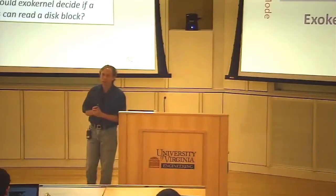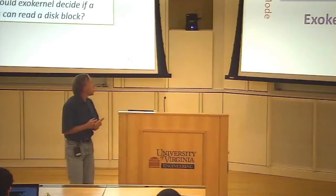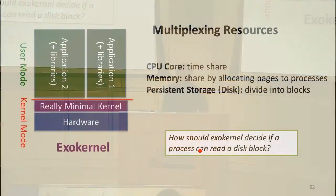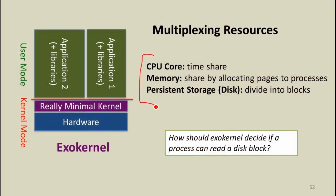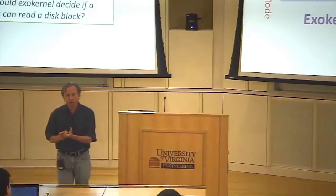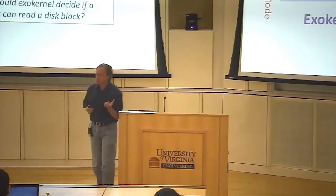Instead, allow the application to put whatever libraries it wants to provide the abstractions that it uses, and only rely on the kernel to mediate resources. The kernel needs to be able to time-share the CPU, share memory, and divide the disk. We still want some control over access — without putting a file system in the kernel, we need to know that when a program reads from the disk, it's allowed to read that part of the disk. But we want to allow different file systems.